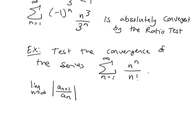So I'm going to start by replacing everything with n plus 1. And then I'm going to divide by a n, which is what's up here written down. When I divide by it, I'm going to flip it to get n factorial over n to the n.